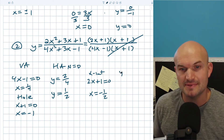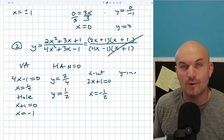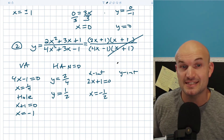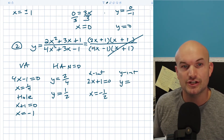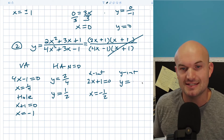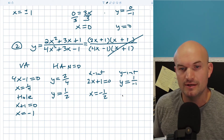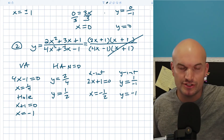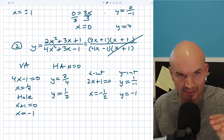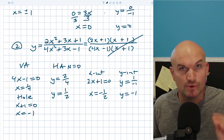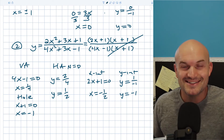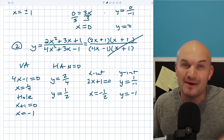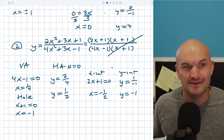For the y-intercept, remember that's when x equals 0 — you're simply taking the constant over the constant. The constants here are 1 over negative 1, so y equals negative 1. To verify, plug 0 in for every x: all x terms go to 0 and you're left with positive 1 over negative 1.